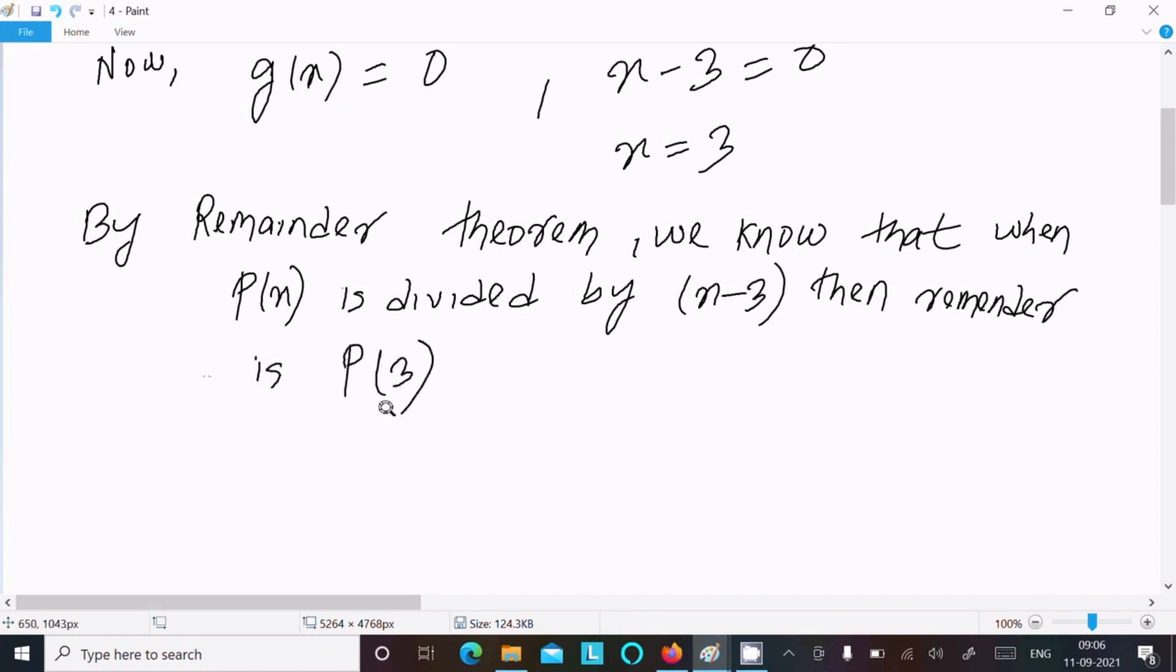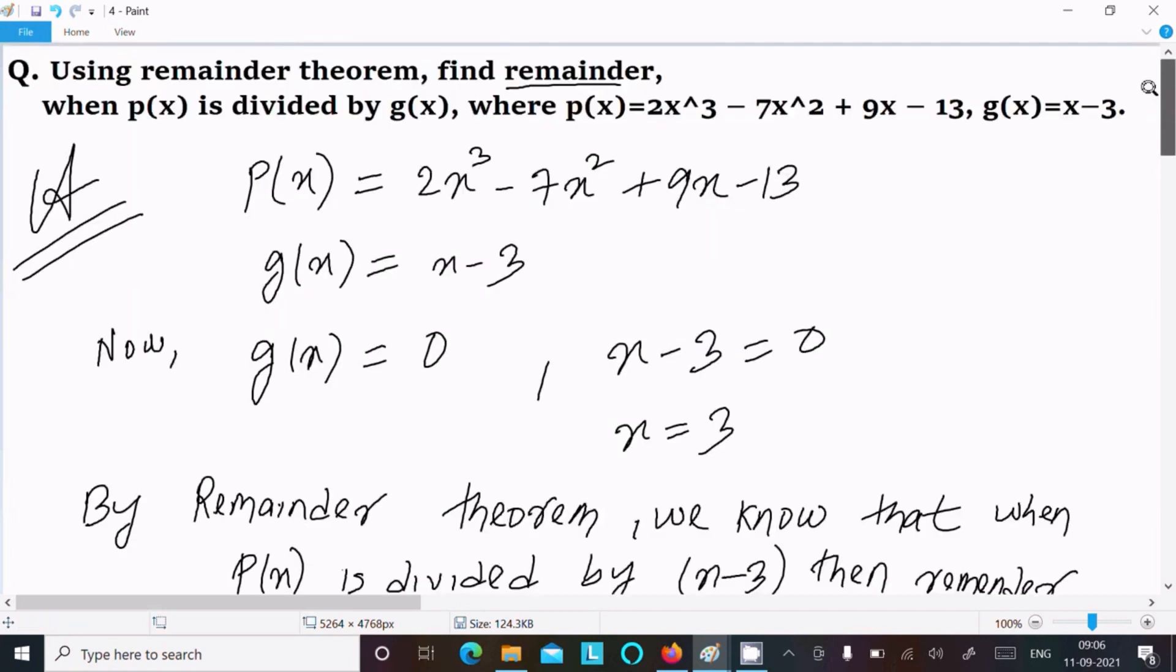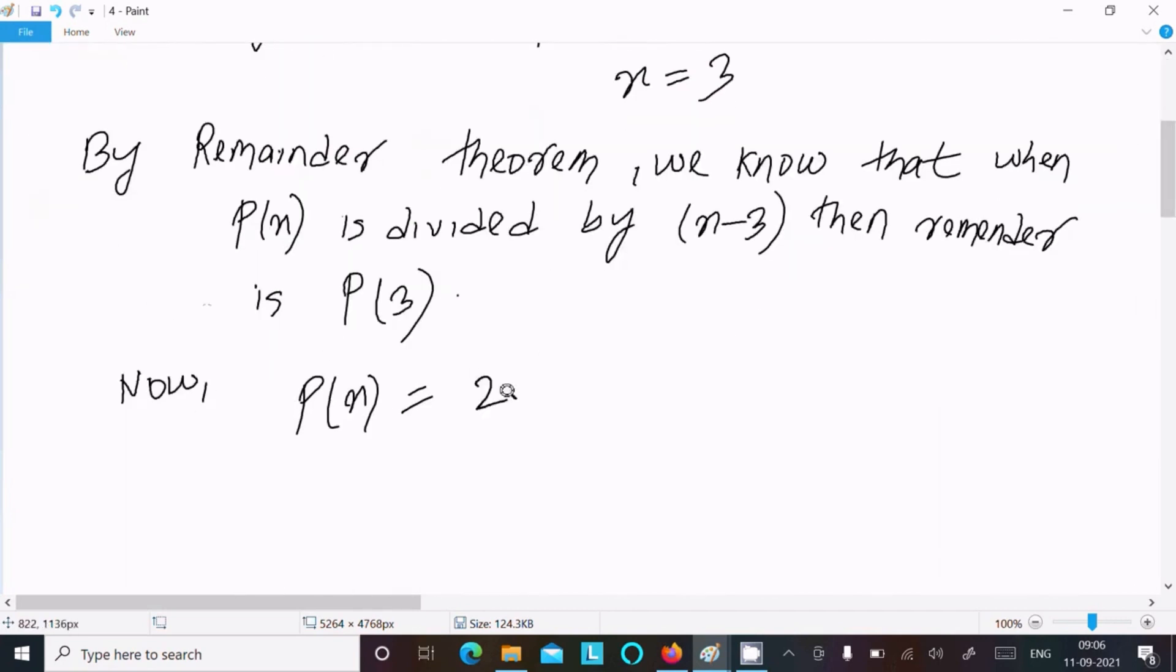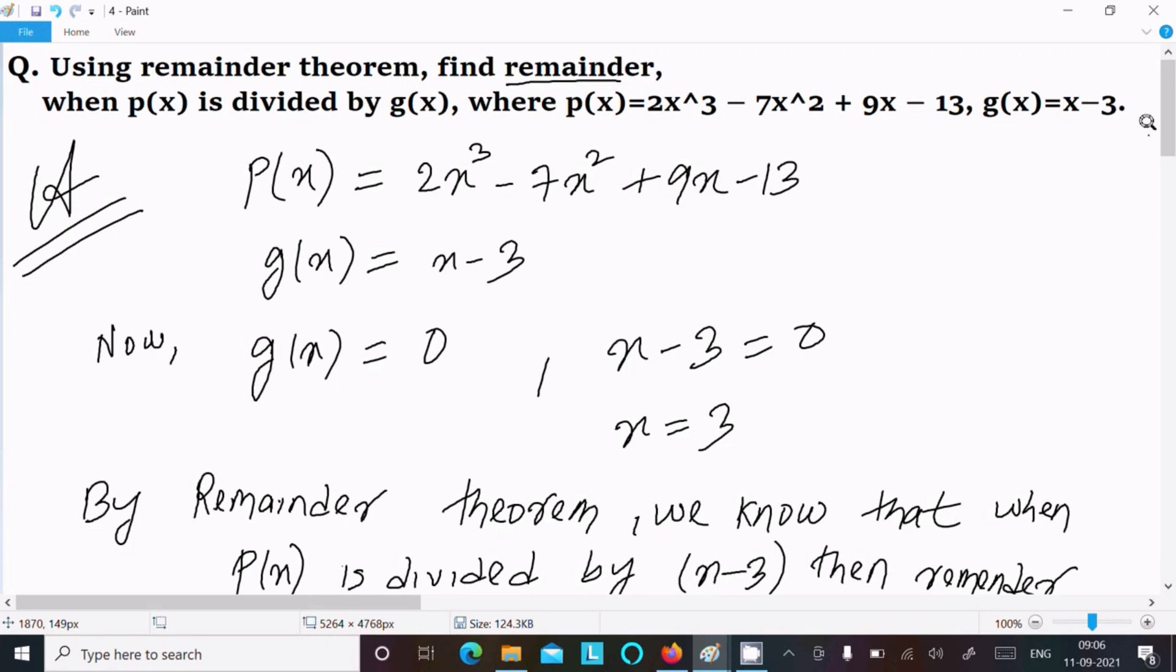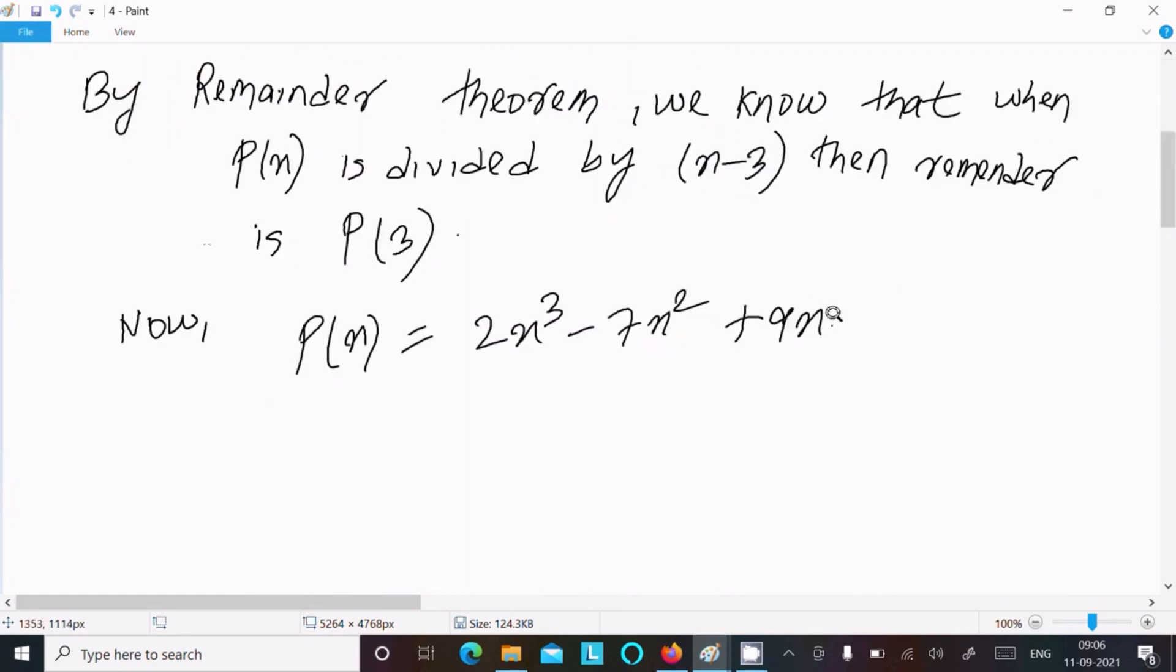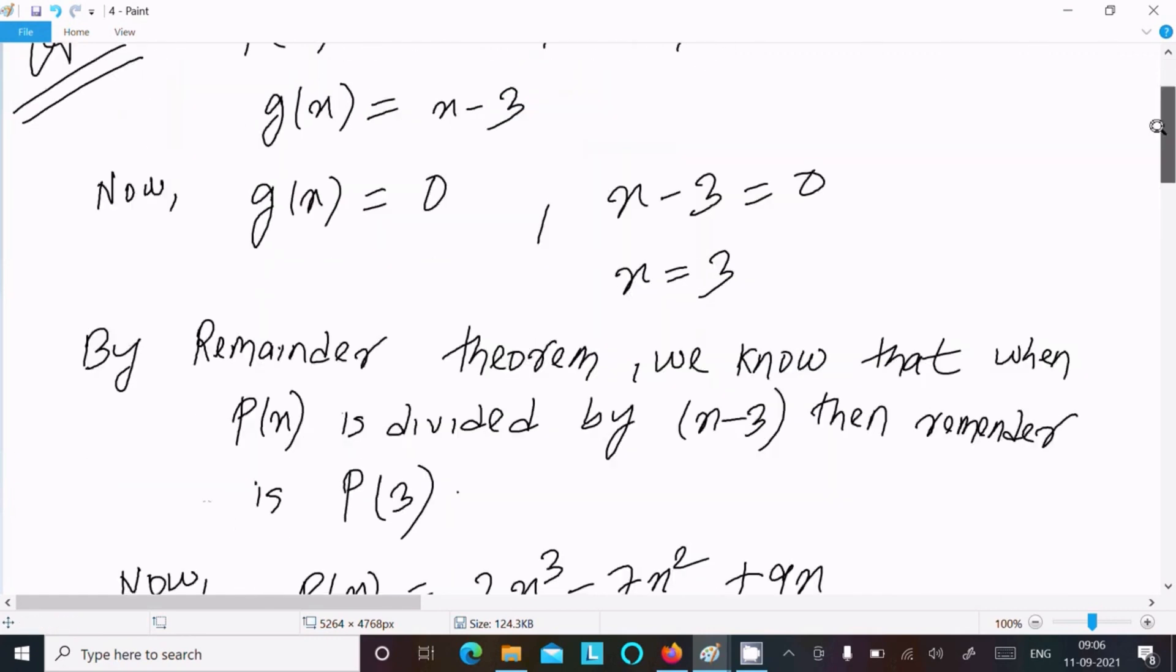Okay, now p(x) equals 2x³ minus 7x² plus 9x minus 13.